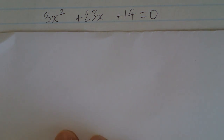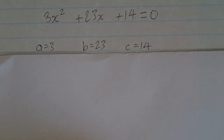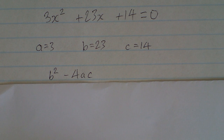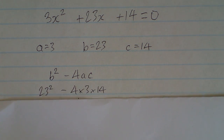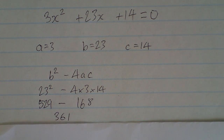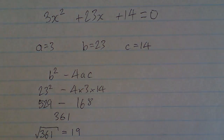We've got the coefficients 3, 23, and 14, and if we put those into b squared minus 4ac, we get 361. The square root of 361 is 19, so it will factorize.